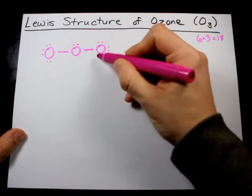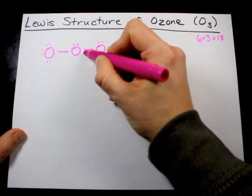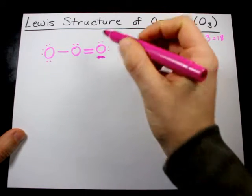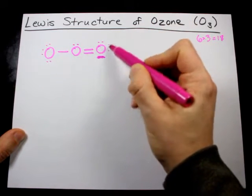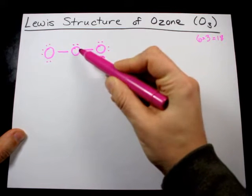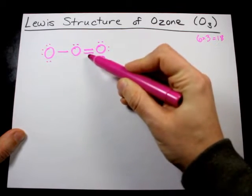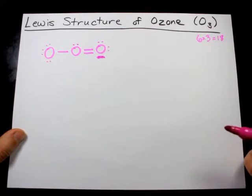And so I'm going to move a lone pair from one of the outer oxygen atoms into a double bond. By doing this, this outer oxygen atom still has eight electrons around it. This middle oxygen also has eight electrons around it, and so the octet rule is satisfied for all atoms.